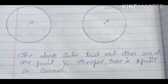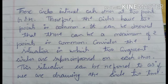The above circles touch each other, therefore there is one point in common. So these circles intersect each other at two points.